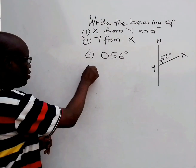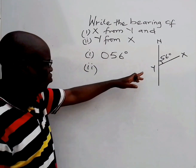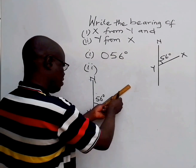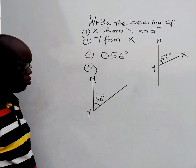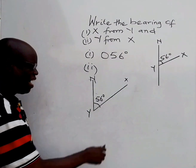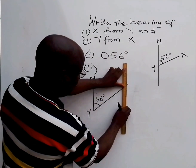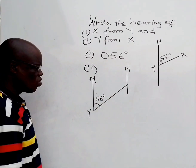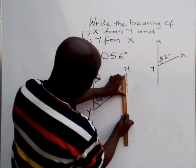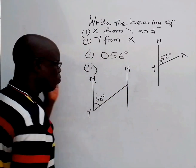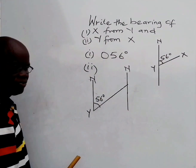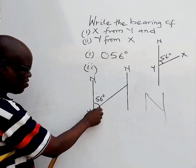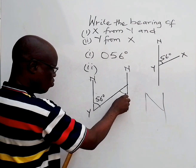Now let's look at the second one: what is the bearing of Y from X? Extend the line and put your X here. At this point, draw your cardinal signifying the north. You can extend this line down for proper understanding. If you look at this, this is a Z angle — from here to here is 56. According to the alternate angle rule, this also is 56.